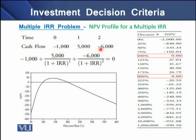Another problem with IRR is that we might have multiple IRRs or no IRR. The multiple IRR problem arises when a project has cash flows that change sign more than once — for example, a negative initial cash outflow at time zero and another cash outflow at time two. In this case we might have multiple IRRs.